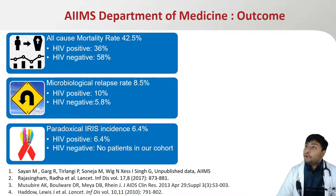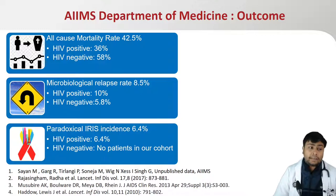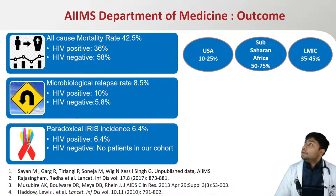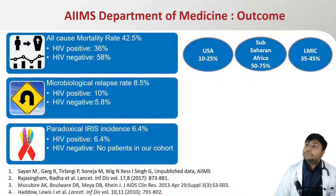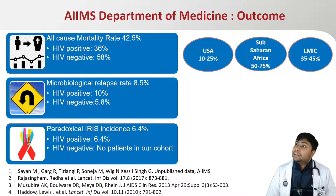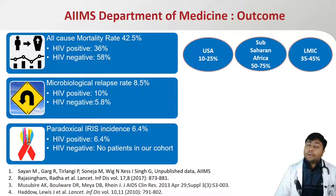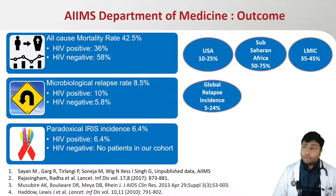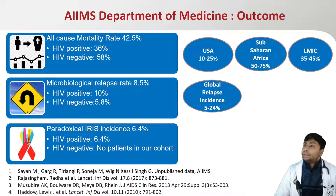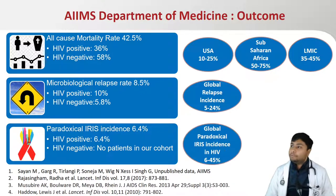Our all-cause in-hospital mortality rate was 42.5%, slightly higher in the HIV-negative group. This is in the range of lower-middle-income countries globally, but the HIV-negative group had higher mortality due to late presentation and late suspicion, and this group also required longer induction therapy. The microbiological relapse rate was 8.5%, slightly higher in the HIV-positive group but within the global range. Paradoxical IRIS incidence was 6.4% in the HIV-positive group.